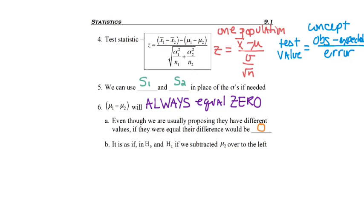Even though somebody's proposing probably that they're different, or one is greater or less than another, remember, we're comparing their differences. And in the event that they were equal, then the subtraction of two equal numbers would be 0.